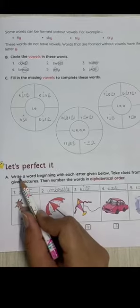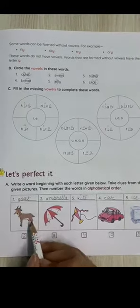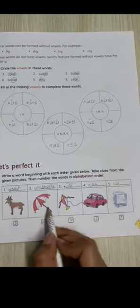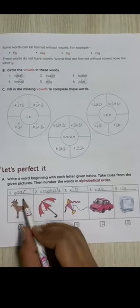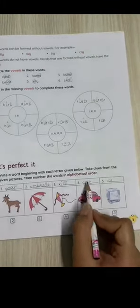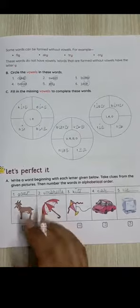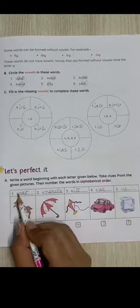Next. Here we have to write the spellings of these pictures. This is the coat, this is the umbrella, this is the kite, this is the car, and this is the ice. Now what we have to do is check the first letters of the spellings.